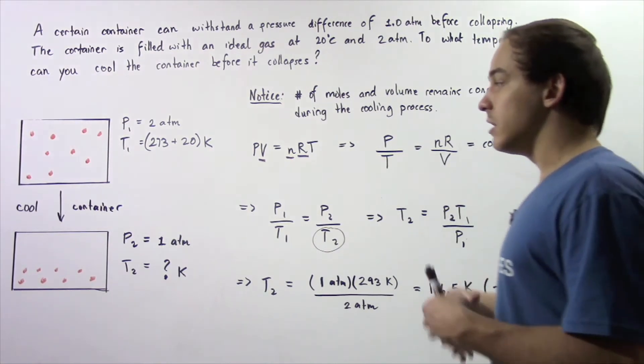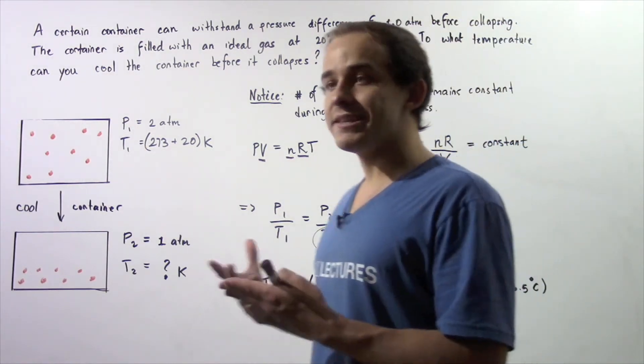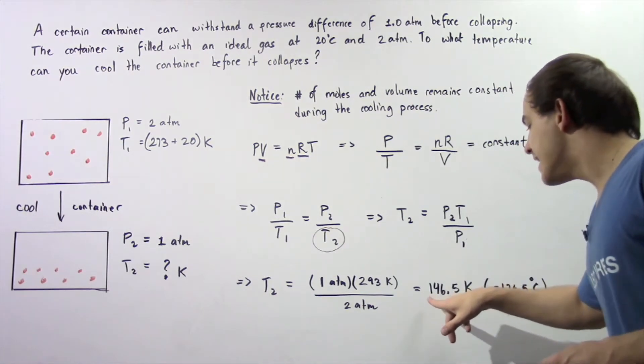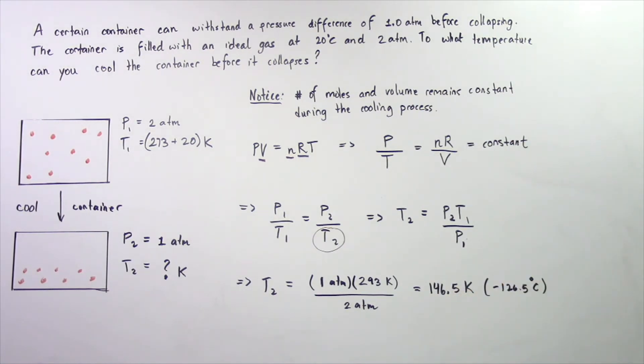So the final temperature of our system number 2 right before our container collapses is 146.5 kelvin or equivalently negative 126.5 degrees Celsius.